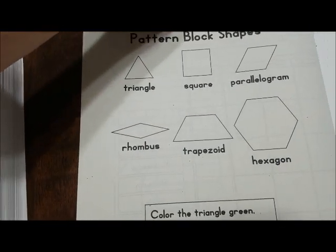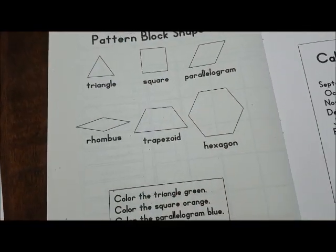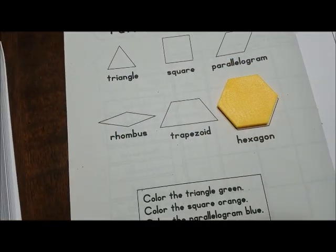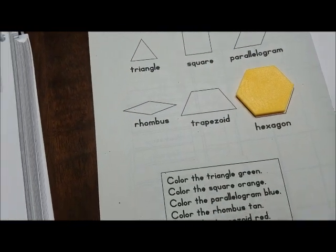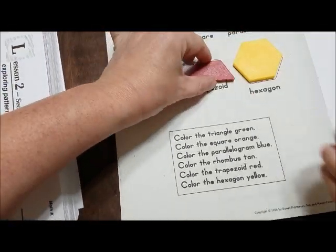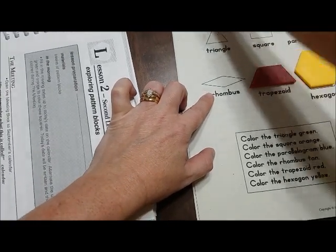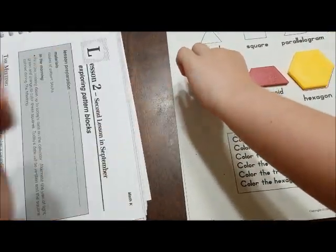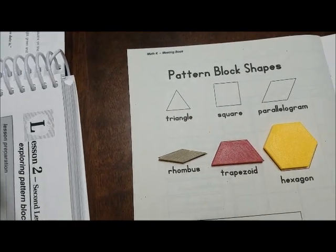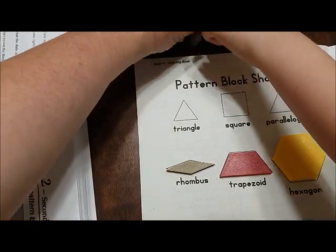And then it tells you what color you're going to color each pattern block. And if you see, we have the Saxon pattern blocks, and they match because it tells you to color the hexagon yellow. Well, the hexagon is already yellow. Alright, it says trapezoid red, which is red. Sissy, can you get me the rhombus that is tan? There you go. Can you get me the parallelogram, which is blue? This one's the parallelogram.